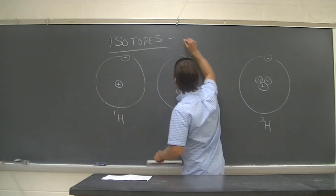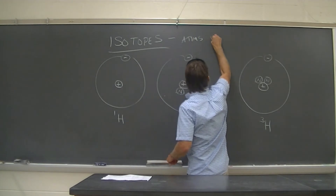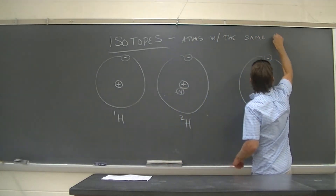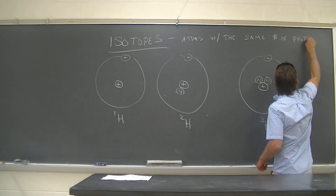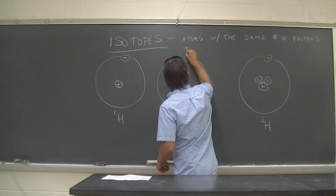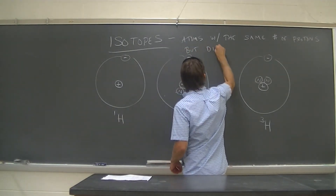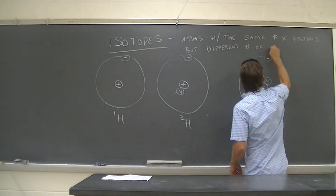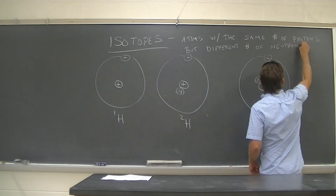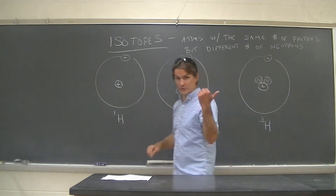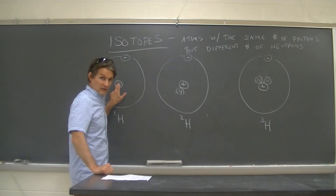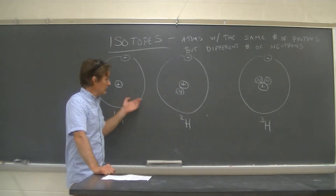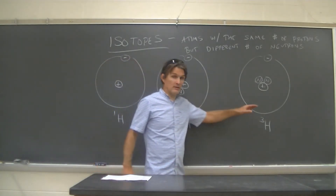Now let me give you the definition of an isotope. Isotopes are atoms with the same number of protons but a different number of neutrons. We can see that's the case for these three hydrogen atoms on the board — they all have one proton, so they're all hydrogen, but they have differing numbers of neutrons: zero, one, and two.